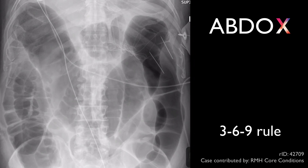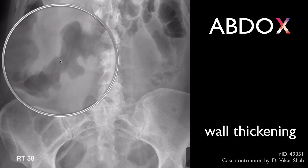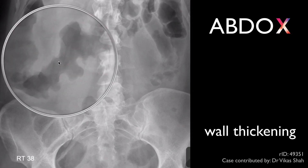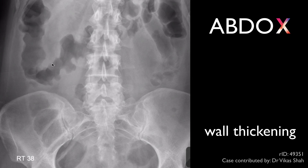Remember the 3-6-9 rule. This is a rough guide to the maximum diameter in centimetres of the small bowel, the large bowel, and the cecum. Bowel wall thickening indicates edema, and gives a bumpy appearance to the wall of the bowel, such as seen in the transverse colon here. This bumpy appearance is known as thumb printing.